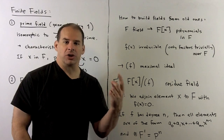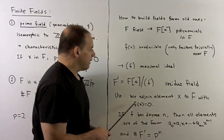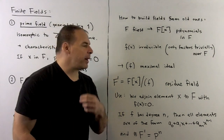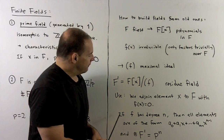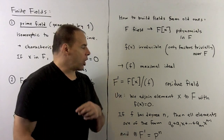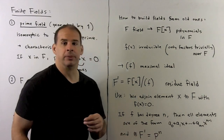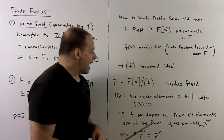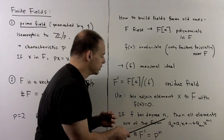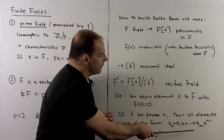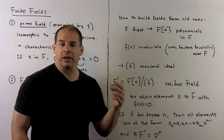The way we should think of this, if we want to actually compute in this newly created field, is that we're adjoining an element x satisfying f(x) = 0, and for computations we always go back to this irreducible polynomial. If f has degree n, then all elements in our residue field are of the form a₀ + a₁x + ⋯ + a_{n−1}x^{n−1}. When we get a term with x^n we use the equation to reduce it to lower exponents. So with coefficients from Z mod p, the number of elements in F′ is p^n, where n is the degree of the irreducible polynomial.